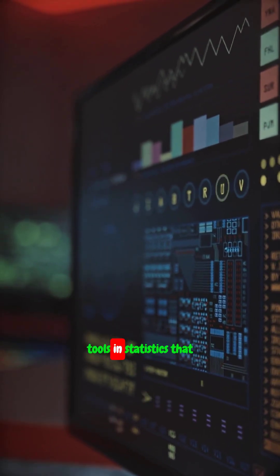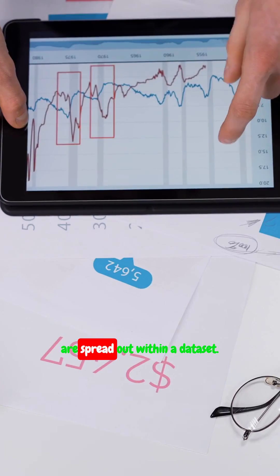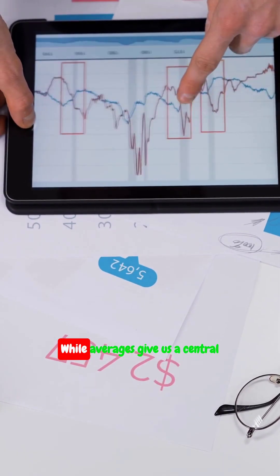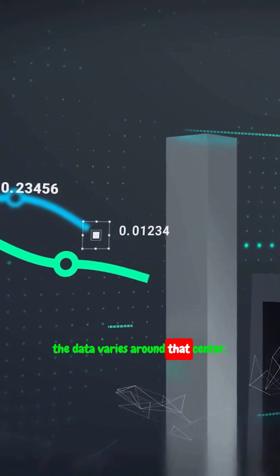Measures of dispersion are essential tools in statistics that help us understand how data points are spread out within a data set. While averages give us a central value, dispersion tells us how much the data varies around that center.